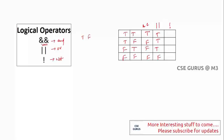For logical NOT: if there is true it becomes false, if there is false it becomes true. It operates on only one operand. So NOT(A): true becomes false, false becomes true. Similarly NOT(B): true becomes false, false becomes true.